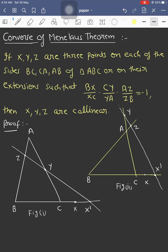The statement of the theorem is: if x, y, z are three points on each of the sides BC, CA, AB of triangle ABC or on their extensions, such that BX/XC × CY/YA × AZ/ZB = -1, then x, y, and z are collinear.